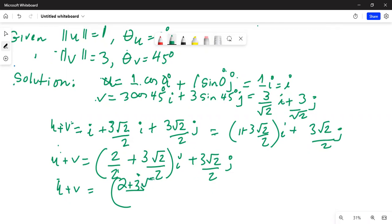It is 2 plus 3 square root of 2, whole thing divided by 2. This is the coefficient of i plus 3 square root of 2 over 2 j, which can also be written as u plus v equals the vector notation 2 plus 3 square root of 2 over 2, 3 square root of 2 over 2.